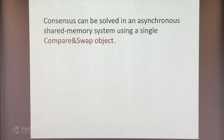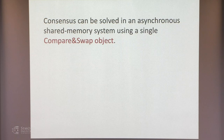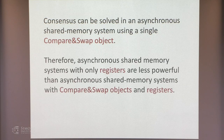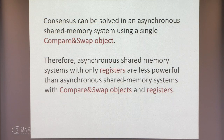Consensus can be solved in an asynchronous shared memory system using a single compare-and-swap object. The first process does a compare-and-swap with bottom and its input value. Every process tries this, and the winner decides its own value; everyone else reads that value. This tells us that asynchronous shared memory systems with only registers are less powerful than those with compare-and-swap objects. Real distributed systems all have compare-and-swap, and most interesting algorithms actually use it.